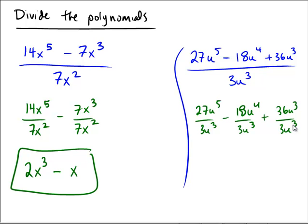So as I look at each one separately, because I'm distributing and doing each one, 27 divided by 3 is 9, and we're left with two copies of u. 18 divided by 3 is 6, and we're left with one copy of u.